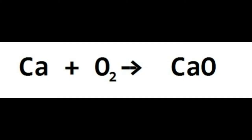Don't forget those seven diatomics. If you see the word oxygen, that really means O₂ — it does not mean O. If I say hydrogen and nothing else, that's H₂. If I say nitrogen, that's N₂. We talked about these diatomics back in unit three.